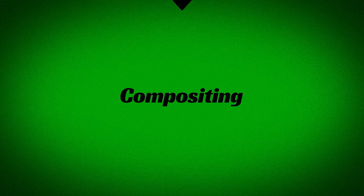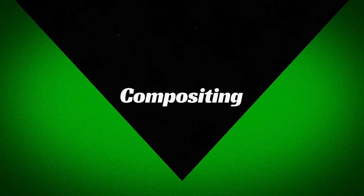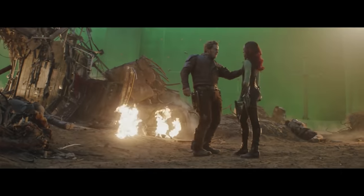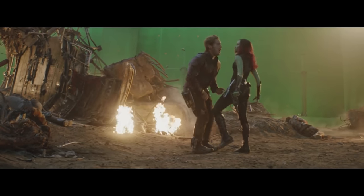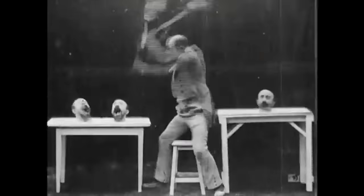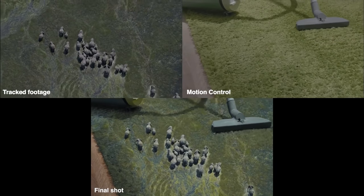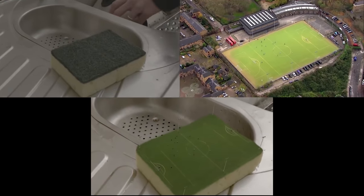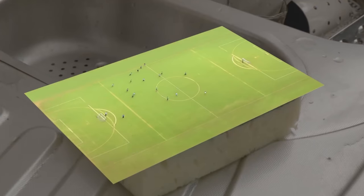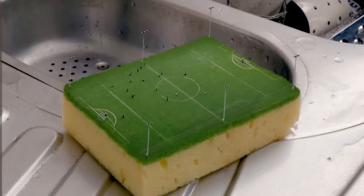Let's jump right into our first term, which is compositing or comping, which is the process of combining multiple layers together to create one new overall final image or shot. This technique has existed for decades and really the idea started in camera using various techniques, but of course these days it's all handled digitally in post-production. Essentially every effect we're going to be mentioning in this episode links to compositing in some way, as they are different techniques used to get your final end result.